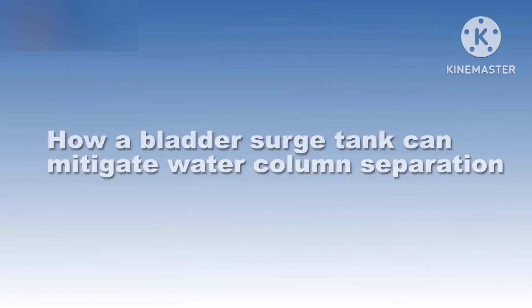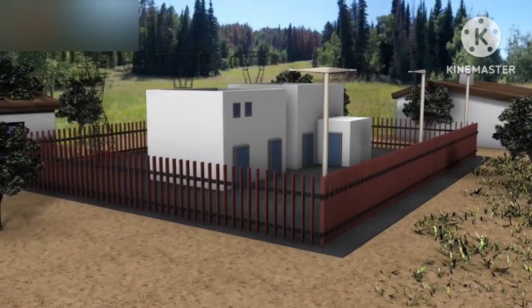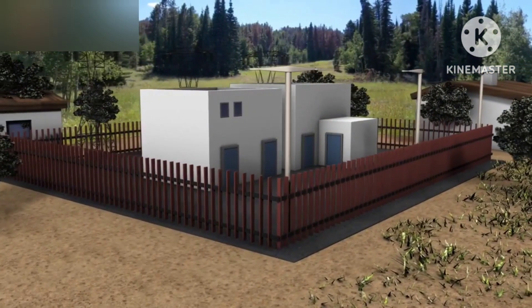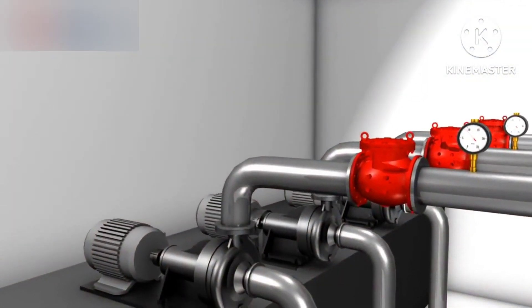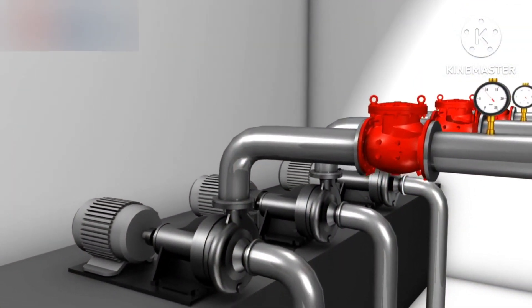A surge vessel is a storage reservoir at the downstream of a feeder pipe to absorb sudden rises of pressure, as well as to quickly provide extra water during brief drops in pressure.